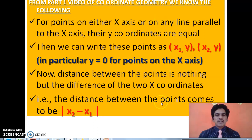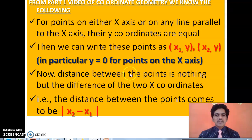From our first lesson we know that whenever you have a point on the x-axis or on a line parallel to the x-axis, their y-coordinates are equal. In general we write their coordinates as (x1, y), (x2, y), (x3, y) and so on — their y is a constant for any line parallel to the x-axis. So in order to calculate the distance between two points, we just have to calculate the difference of the two x-coordinates and take their absolute value. Distance cannot be negative, so when you get the difference as negative 5, you take its absolute value and get 5.